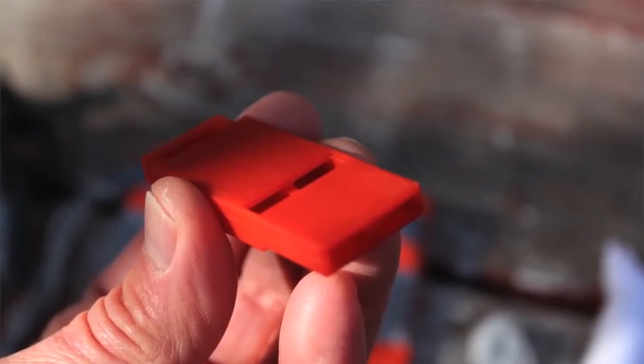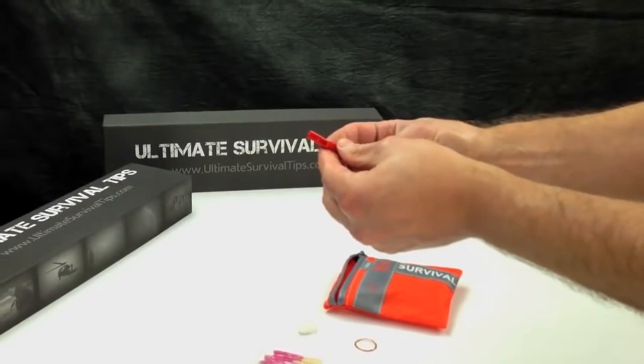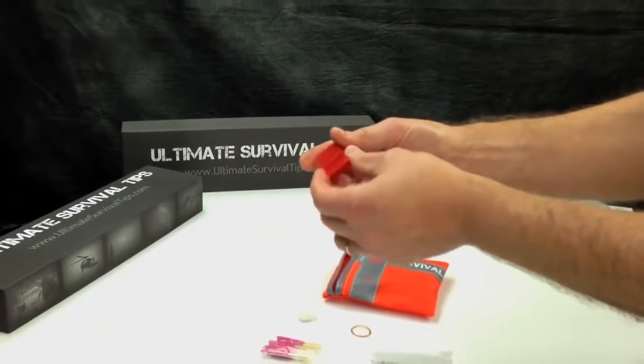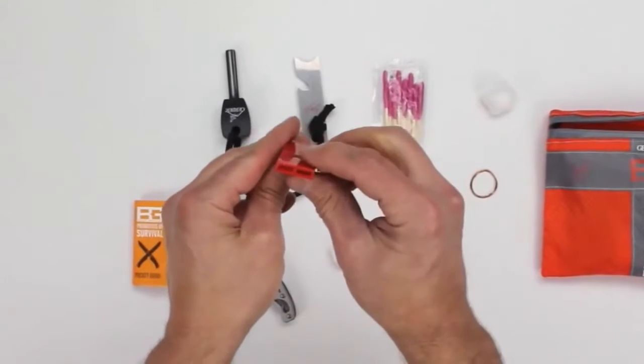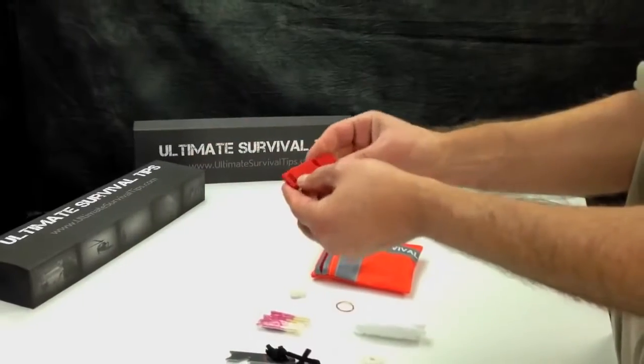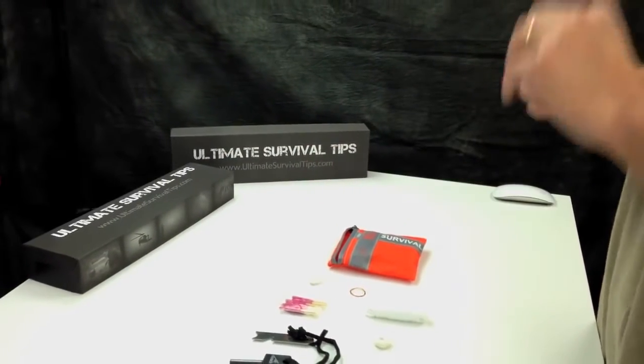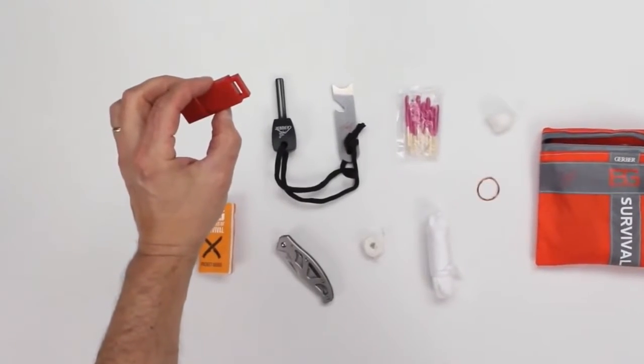Next we have this emergency whistle. It's obviously not the most expensive piece of gear in this kit—it's pretty cheap looking, red, with a lanyard hole—but it works when you blow into it. It's totally unimpressive to look at or touch, but it does its job and is quite loud. So if you're attacked, stranded, or lost, it should help bring attention to your plight.